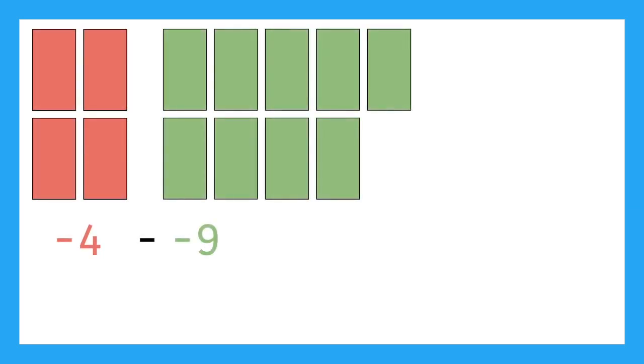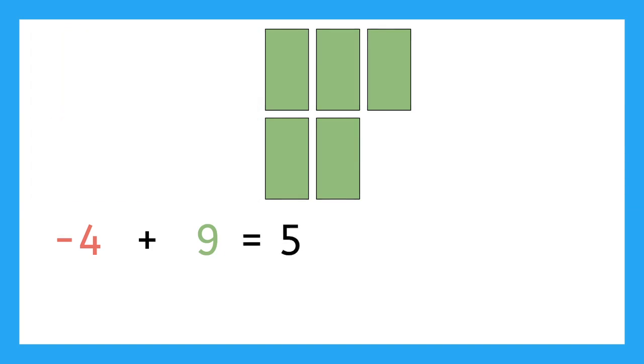Remember, when we subtract a negative we're really just adding the positive — we're doing it in reverse. So if you owe four dollars and return a nine dollar item, you get back that nine dollar refund and immediately pay off your debt, leaving you with five dollars. Notice how minus a negative turned into a plus, making the transaction easier to understand.